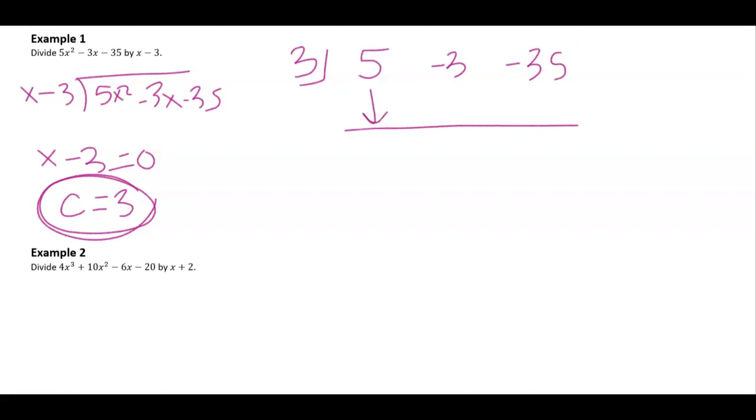You bring this down. We then multiply here. So I would get 15 that goes right here. I then add straight down. I get 12. Again, I multiply and get 36. So I find using this method that I have a remainder of 1.